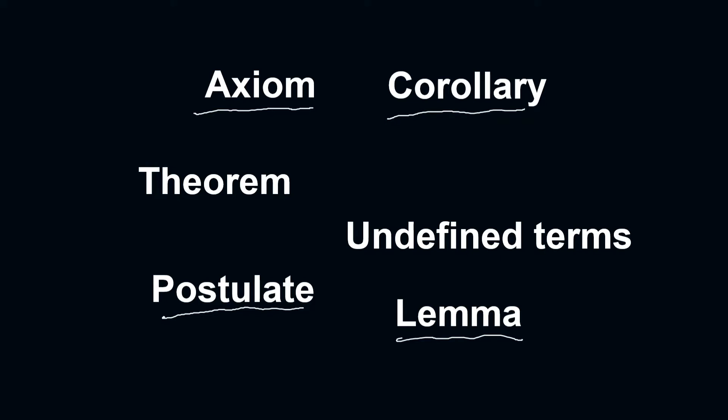Undefined terms are considered to be the building blocks of geometry. We have three undefined terms, and these are point, line, and plane. These undefined terms are ideas, and when we are going to refer to real-life objects, we just refer to these objects as representations of these undefined terms, and not necessarily examples of these terms. For example, if I'm going to draw a dot, then that particular dot is just going to be a representation of a point. The tip of the pen is just going to be a representation of a point. A point has no dimension — it denotes a location, but it has no width, no length, no thickness. So, it's an undefined term.